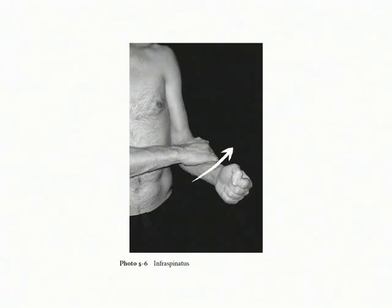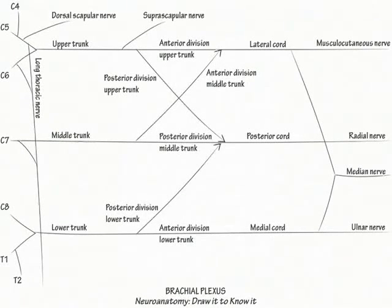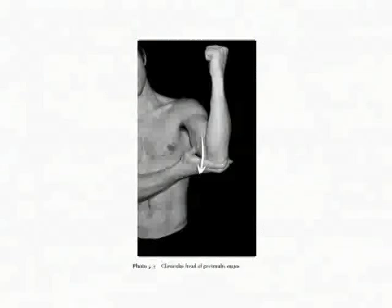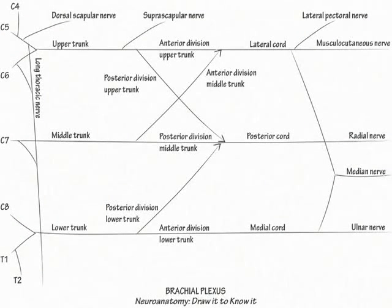The other external rotator is teres minor. Moving distally, indicate that the lateral pectoral nerve originates from the lateral cord. It innervates the clavicular head of pectoralis major, which adducts and internally rotates the arm.